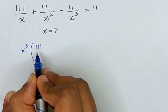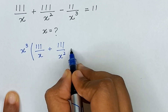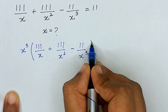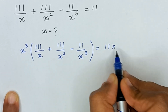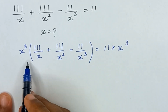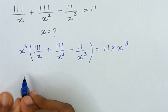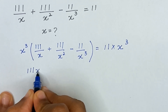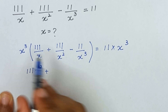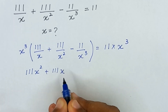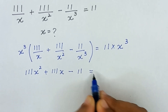In the first step, we will multiply the whole equation by x³. When x³ multiplies with the first term it will become 11x², with the second term x³ divided by x² will become x, so it will become 11x.